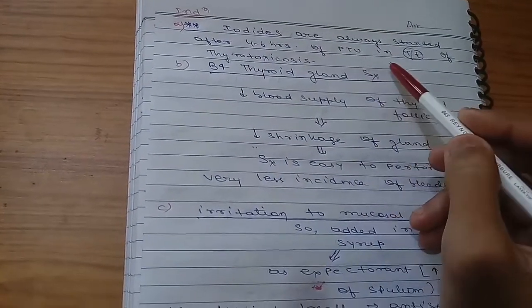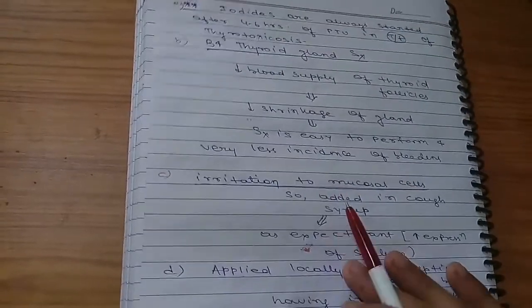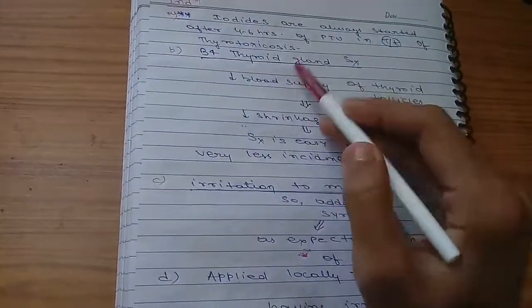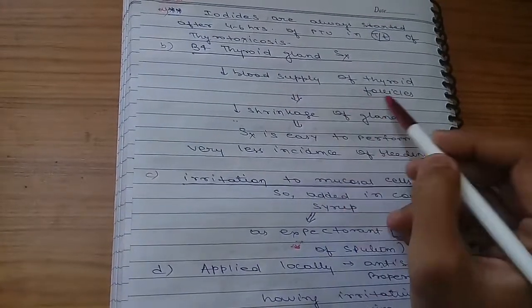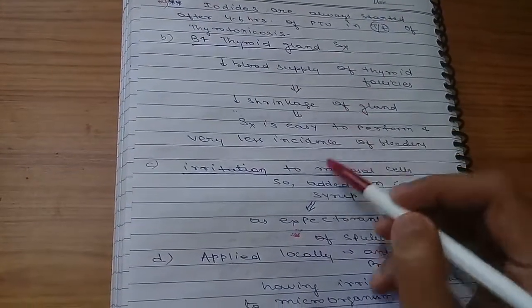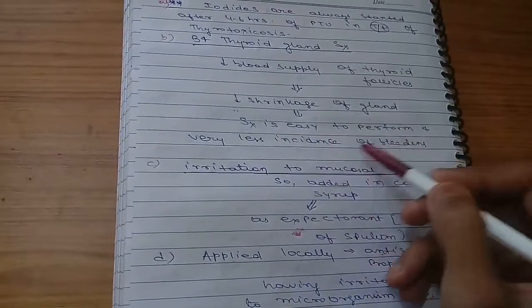Indication: iodides are always started 4 to 6 hours before PTU in treatment of thyrotoxicosis. Before thyroid gland surgery, you should also give this drug.